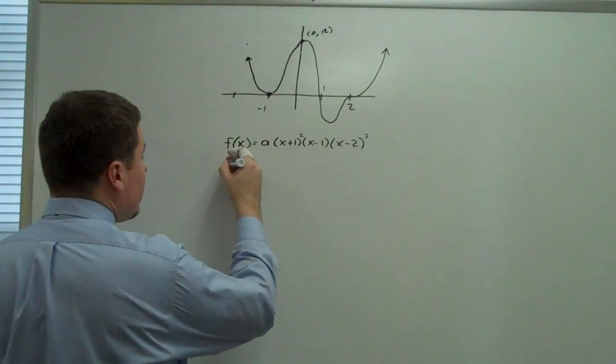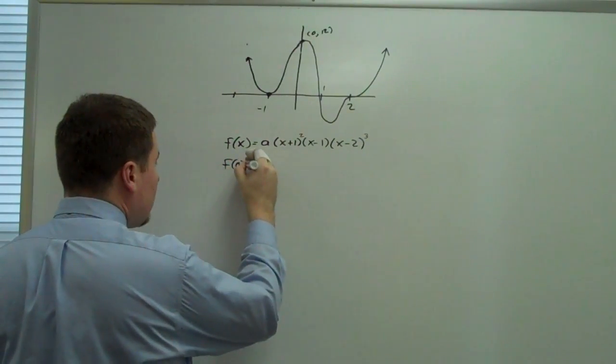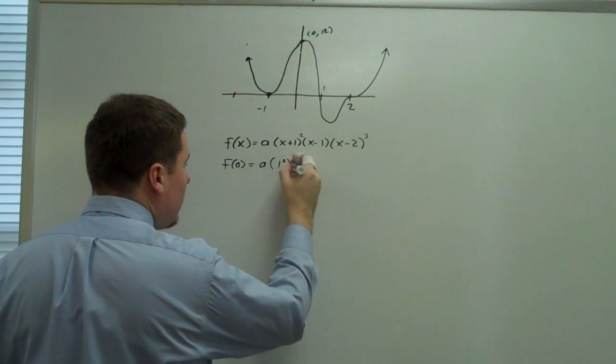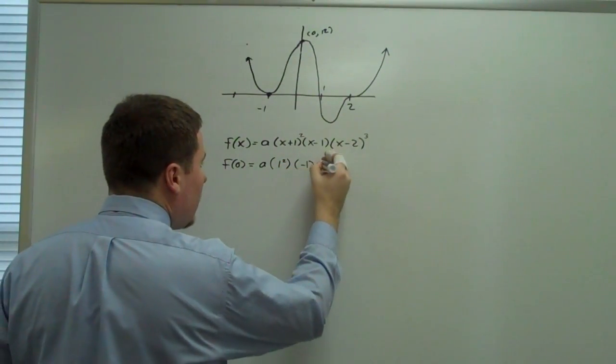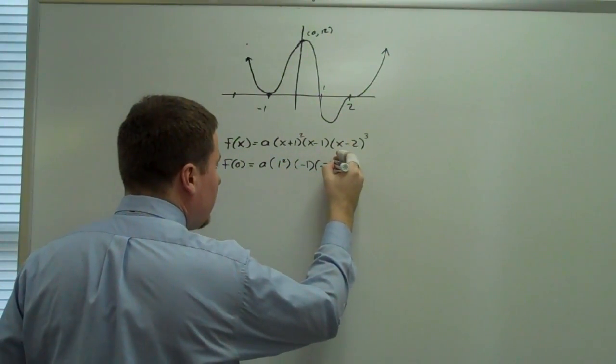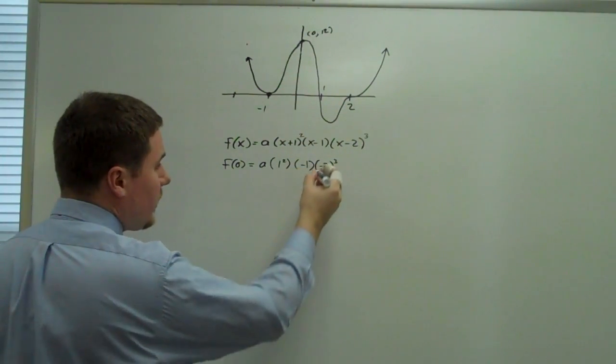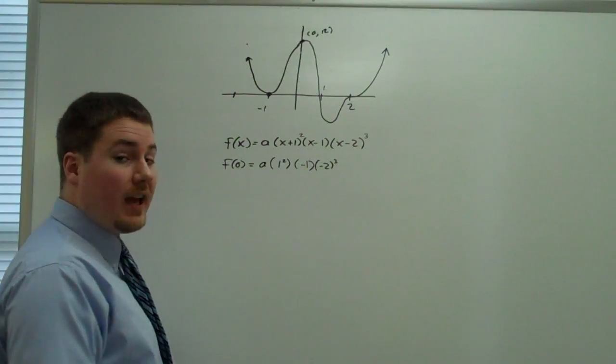So we now have to find what happens at 0, 12. So we need to find f of 0. So that equals a times 1 squared times negative 1 times negative 2 to the third. So 1 times negative 1. Negative 2 to the third would be negative 8.